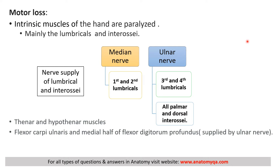The main motor loss involves the intrinsic muscles of the hand, supplied by C8 and T1 spinal segments — mainly the lumbricals and interossei. The median nerve supplies the first and second lumbricals, while the ulnar nerve supplies the third and fourth lumbricals and all palmar and dorsal interossei. In addition, there is paralysis of the thenar and hypothenar muscles, flexor carpi ulnaris, and the medial half of flexor digitorum profundus in the forearm.